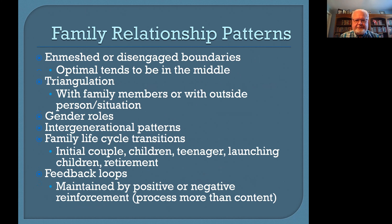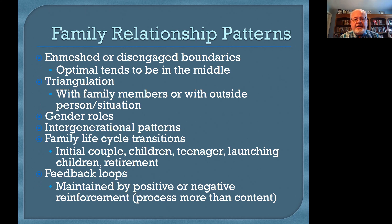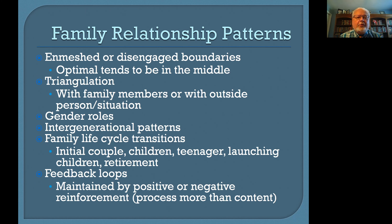There are quite a number of different family relationship patterns. Families may be enmeshed or disengaged. Keep in mind that enmeshed doesn't mean close — it means people don't have distinguishable aspects of themselves and can't be separated; they're totally dependent. Disengaged is not the same as autonomous — it means they are disconnected with little ability to connect with one another. The optimal tends to be in the middle. Families can also experience triangulation, with the most common pattern being a child triangulated with parents, or an outside situation such as work or alcohol triangulated in a marital relationship.